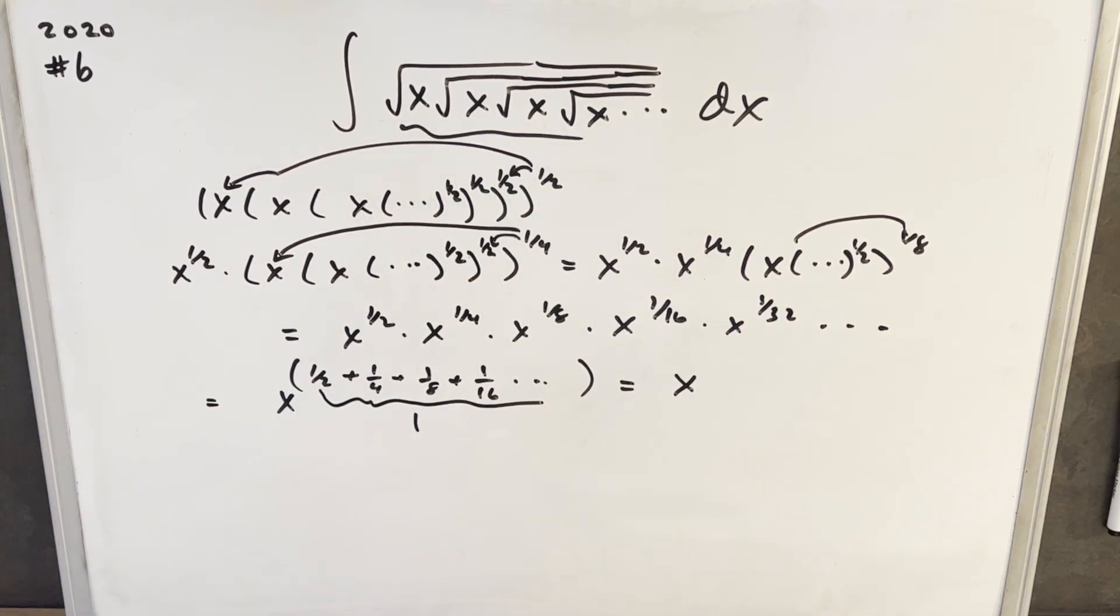And like I said, there's not a lot of integration going on, but this is just our integral. So our integral, we're just integrating X DX. And so with the power rule, we get our solution, X squared over two plus C.